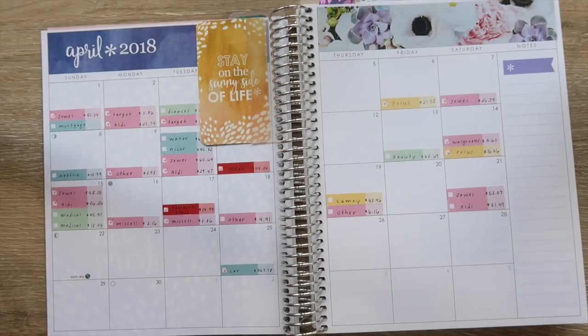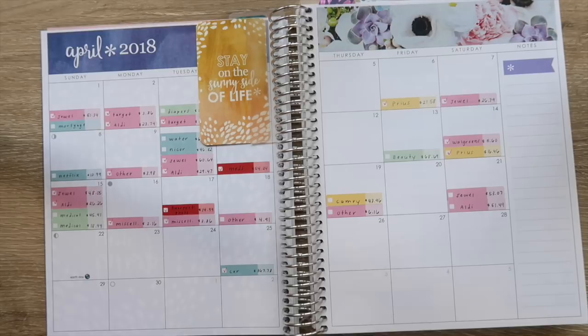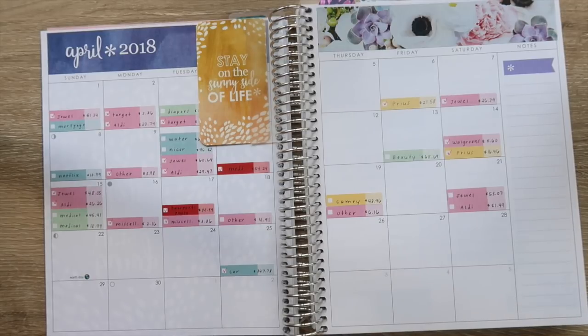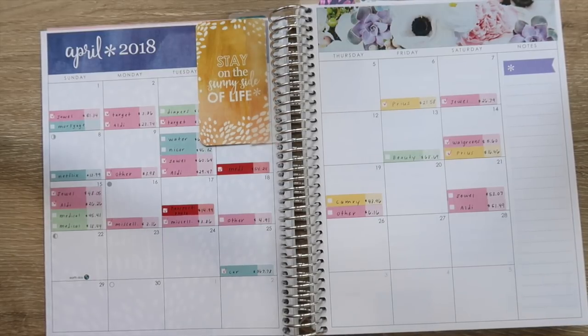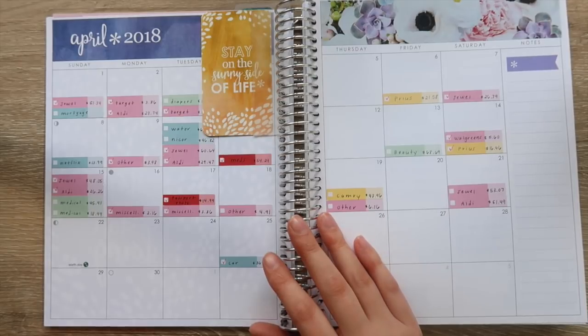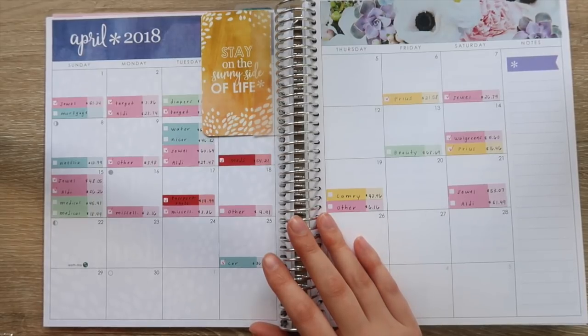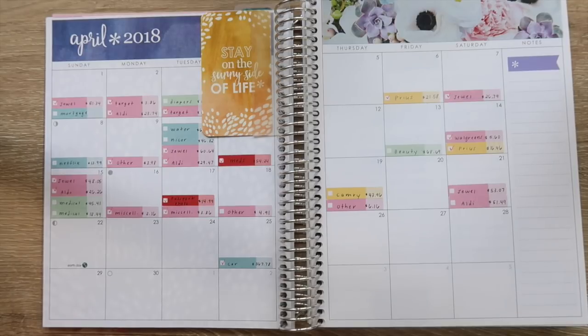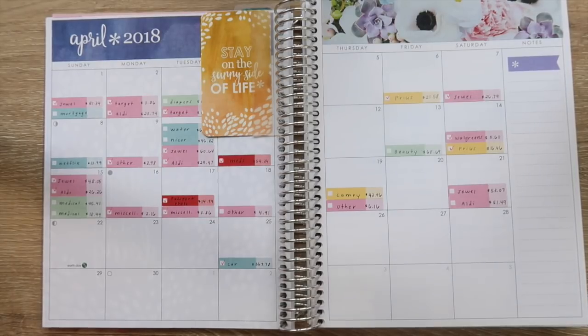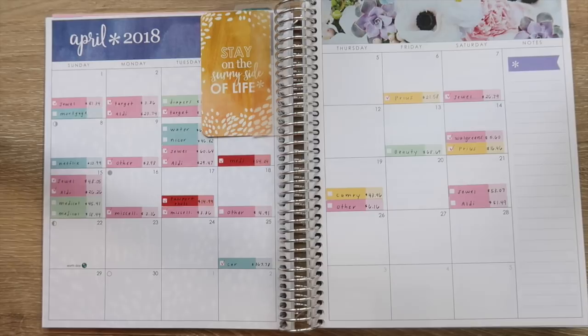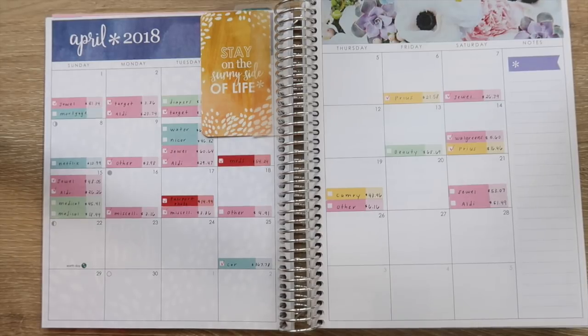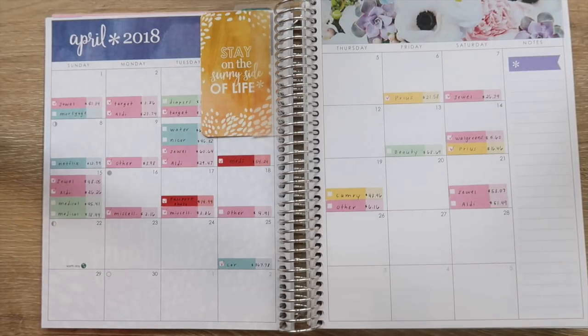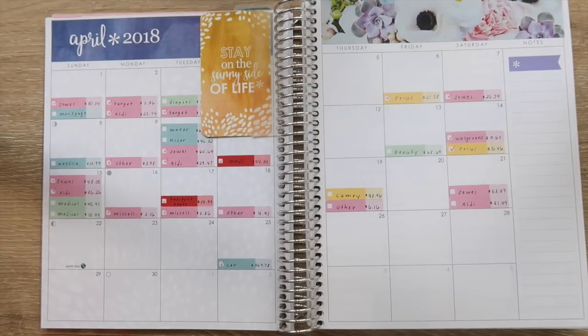The first thing that I like to track is groceries, mostly because groceries is an area where we tend to overspend. It's also a category that is necessary because we have a child and we can't restrict ourselves if she needs extra fruit or something.